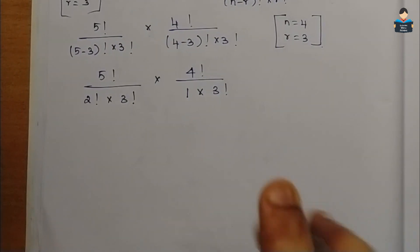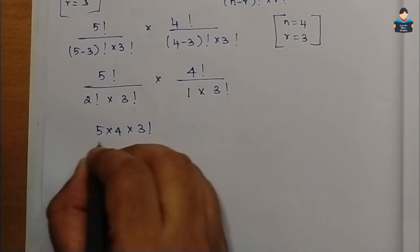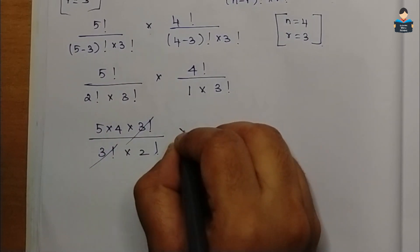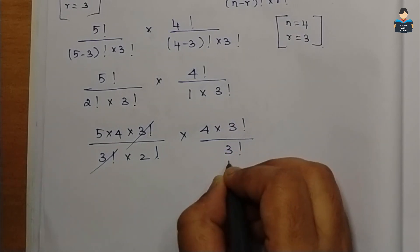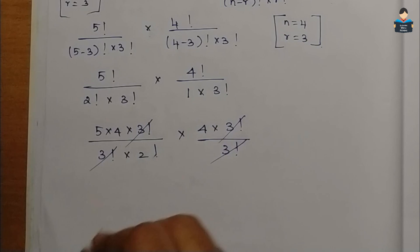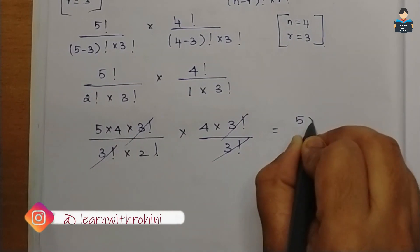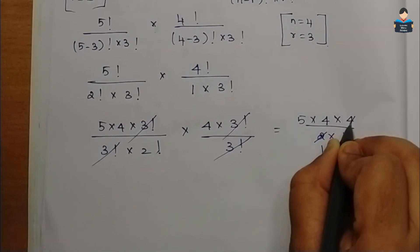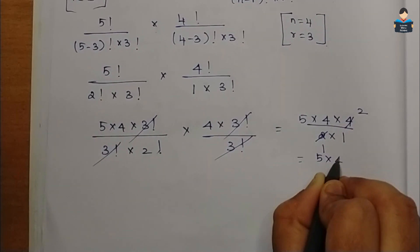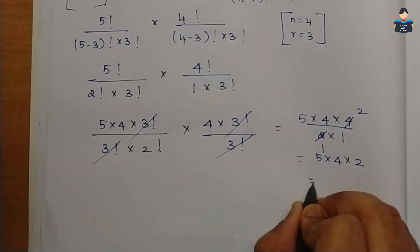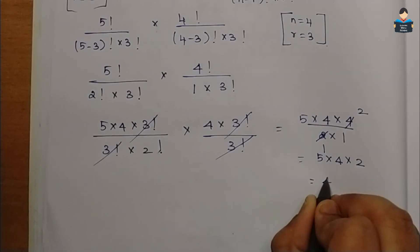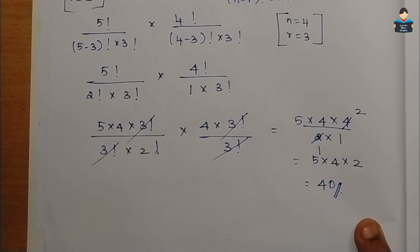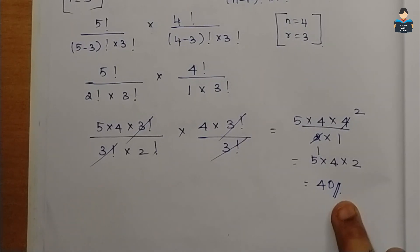Calculating: 4 into 3 factorial by 3 factorial, the 3 factorials cancel. Then 5 into 4 by 2 factorial, which is 2 into 1. So 5 into 4 into 2: 5 fours are 20, 20 into 2 equals 40. So a team of 3 boys and 3 girls can be selected in 40 different ways.